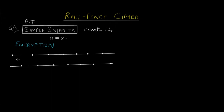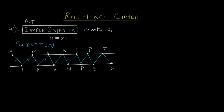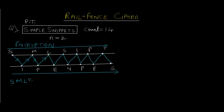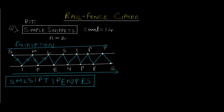I've marked the points on the two rail fences and simply start writing 'simple snippets' along the fence in a zigzag fashion. So on the top rail: S, M, P, L, E, S, I, P, T — and on the bottom rail: I, P, E, N, P, E, S. To form the cipher text, we take the top rail first left to right, then the bottom rail left to right. The first part is 'SMLSIPT' and the second part is 'IPENPIES', giving us our cipher text.